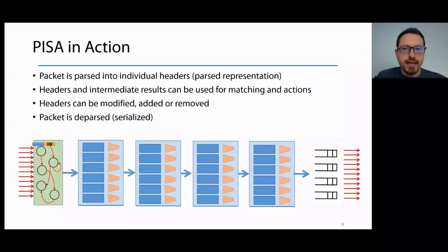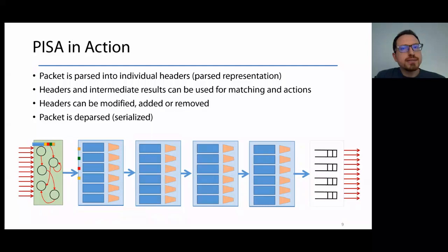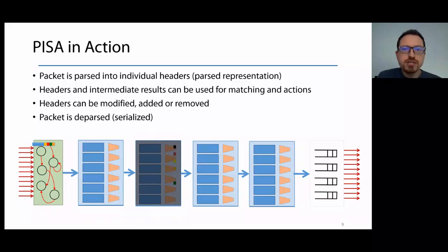Let's see an example of one pipe in action. A new packet is first parsed into individual headers to extract a parsed representation. Then headers and intermediate results are processed by match-action tables. In this process, headers can be modified, added, or removed, and the switch state, like packet counters, can be updated.